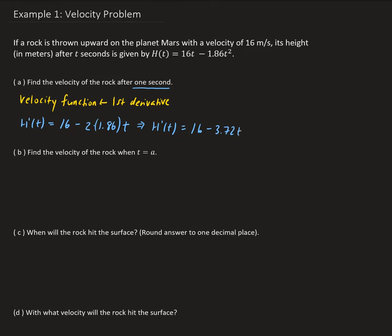That is the velocity function. We can go ahead and evaluate this at one second. So h prime of 1 is going to be 16 minus 3.72 times 1. That gives us 12.28 meters per second — I had written 2.28 earlier, but that should be 12.28.